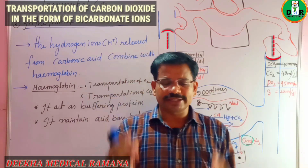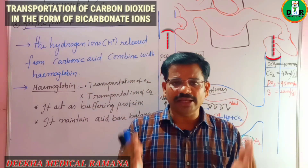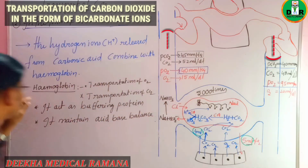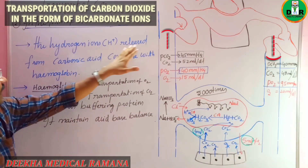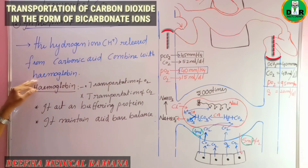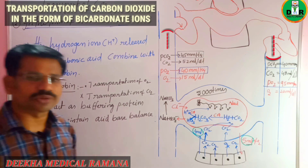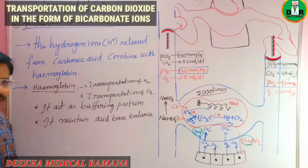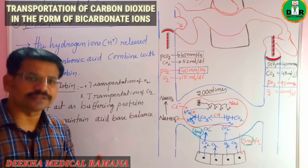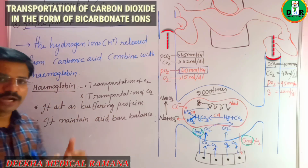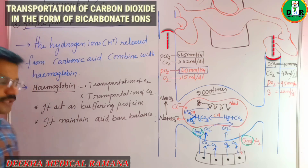These highly reactive protons can damage DNA and cell membranes, so they must be neutralized. The hydrogen ions released from carbonic acid are combined with hemoglobin. Hemoglobin's main known role is transporting gases like oxygen and carbon dioxide, but it also acts as a very important buffering protein in the body, helping to maintain the body's pH and acid-base balance.